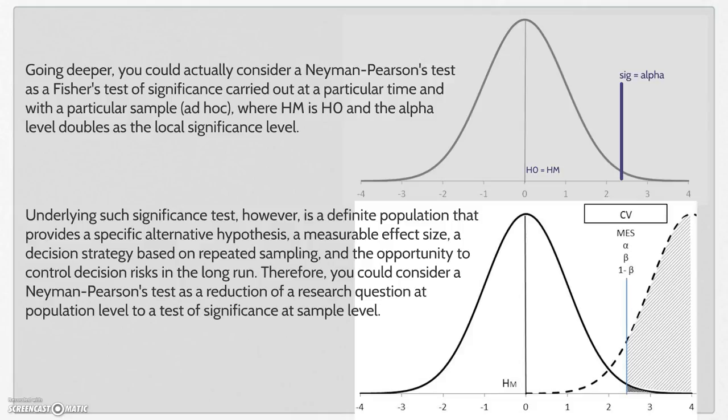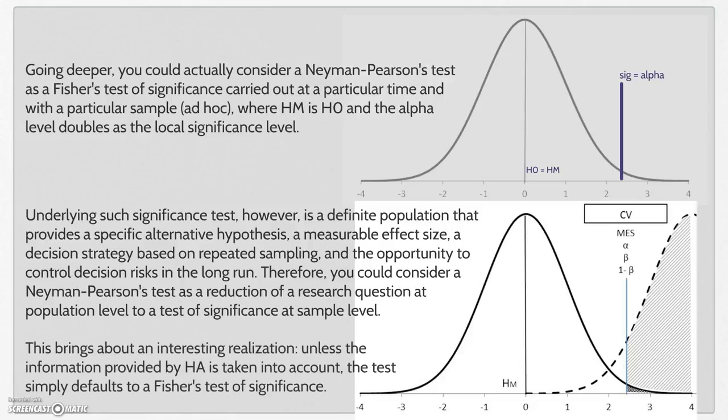Therefore, you could consider a Neiman-Pearson's test as a reduction of a research question at population level to a test of significance at sample level. And this brings about an interesting realization. Unless the information provided by this alternative hypothesis is taken into account, the test simply defaults to a Fisher's test of significance.